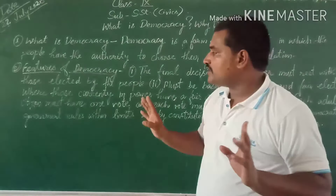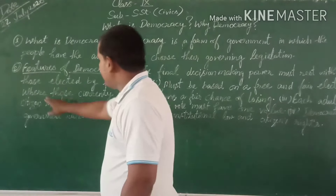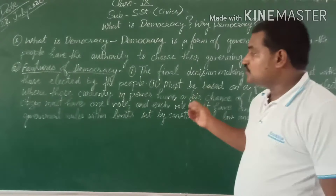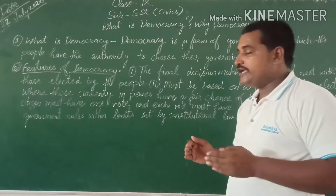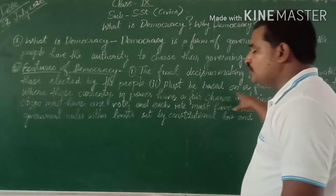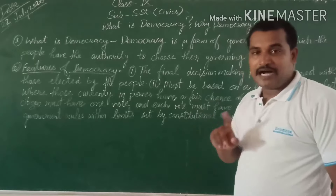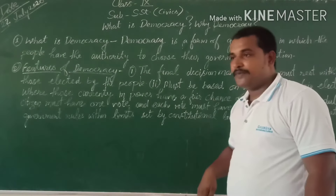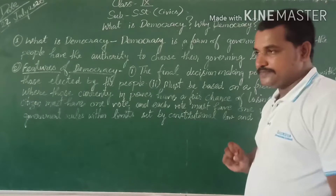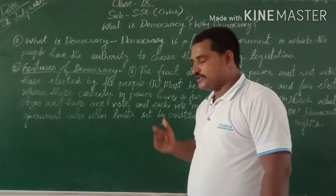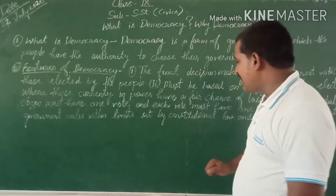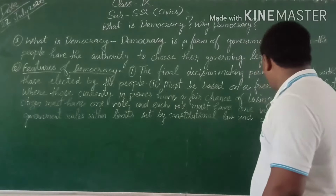Free and fair election means there should be no unfair advantage for those currently in power. The party which is already in power must also have a chance of losing. If they have to lose, then they can lose. The third feature is: each adult must have one vote and each vote must have one value.